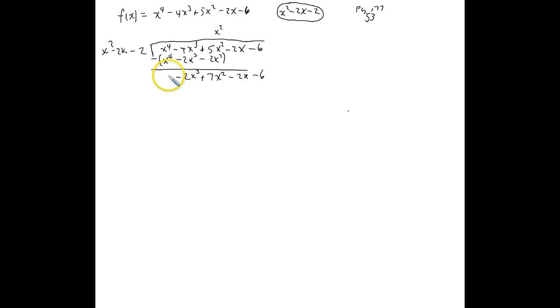Again, now looking at what am I going to multiply x squared by to give me negative 2x cubed, and that will be negative 2x. So, multiplying the negative 2x times the three terms. First one will be negative 2x times x squared would be negative 2x cubed. That's what we wanted. Negative 2x times negative 2x is a positive 4x squared. And then negative 2x times negative 2 is positive 4x.